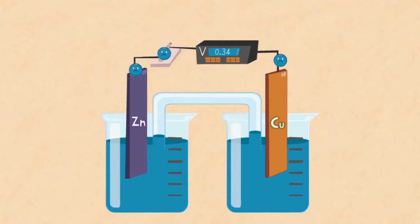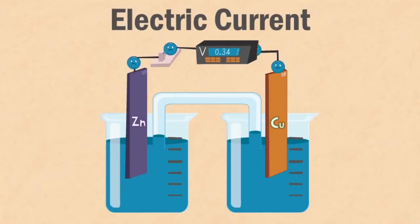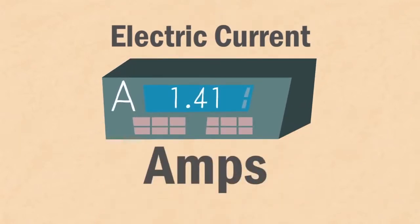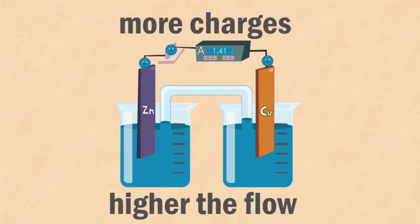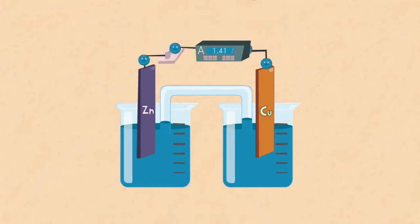The flow of electrons is the electric current and is measured using an ammeter. Current is measured in amps. The more charges that pass a point in the wire at any given second, the higher the flow, and therefore the higher the current.